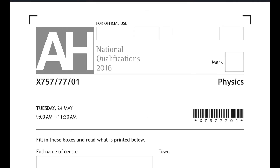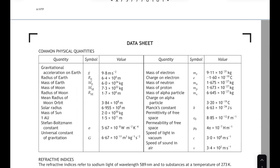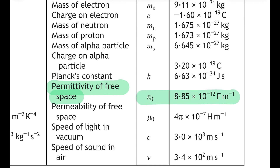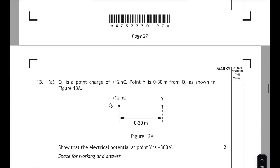Have a go at the questions first, then come back when you're ready and we'll show you how we worked through them. In the 2016 paper, the first thing you see is the data sheet. The useful constant for these questions is the permittivity of free space, symbol ε₀, with a value of 8.85×10⁻¹² farads per metre. Don't mix it up with the permeability of free space, μ₀, which relates to magnetic fields.